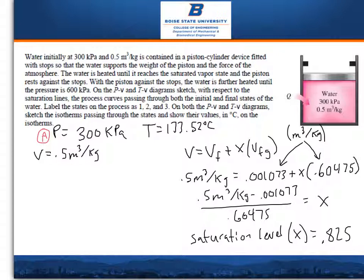On the PV and TV diagram sketch, with respect to the saturation lines, the process curves passing through both the initial and final states of water. Label the states on the process as 1, 2, and 3. On both the PV and TV diagrams, sketch the isotherms passing through the states and show their values in degrees Celsius on the isotherms.